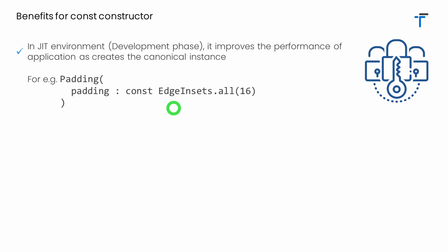However, if we use const to define this EdgeInsets.all, no matter how many times you use that statement, Dart or Flutter will create only one instance because it's a canonical instance — as long as we have the same value. If you pass a different value like 20, Flutter will create another instance, but for the value 16 it will not create another instance; it will reuse the existing instance in memory, which definitely improves application performance.